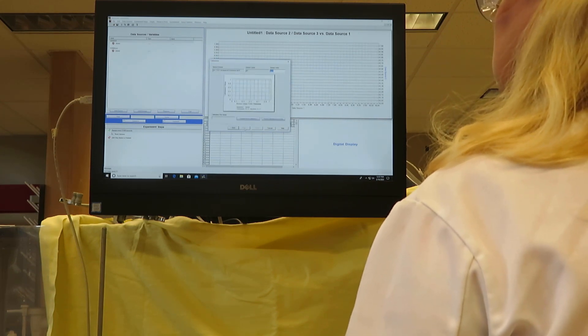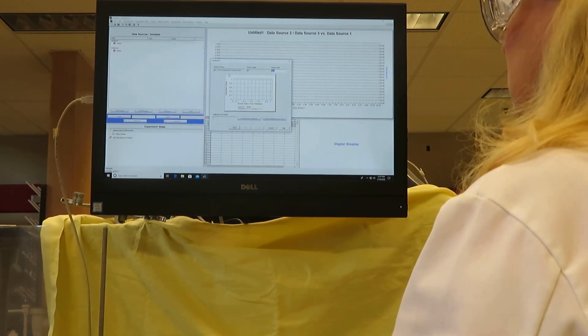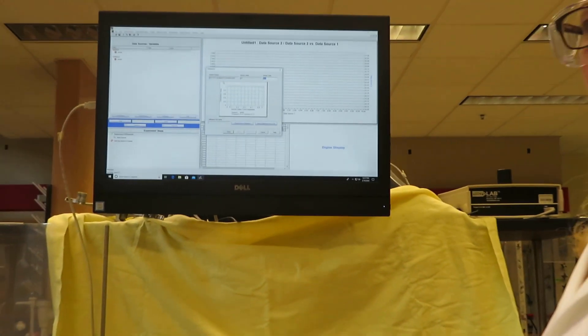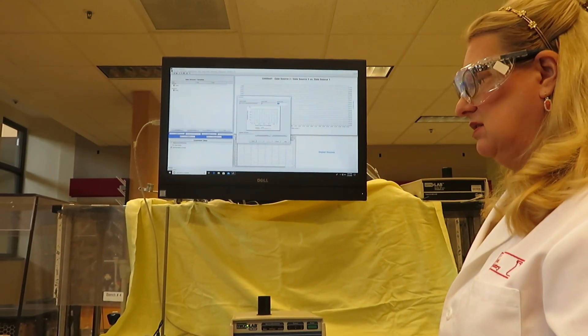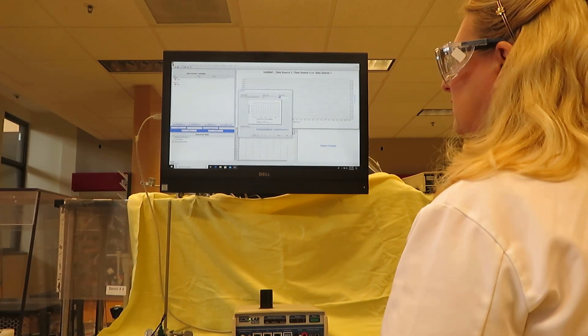Now we hit Next. The pH probe measures in millivolts, but we have to retrain it each time to determine what pH is associated with each millivolt reading. So we're going to perform a new calibration.